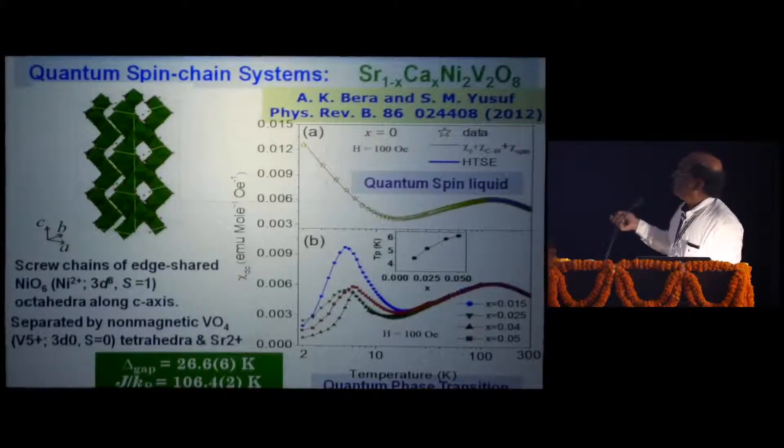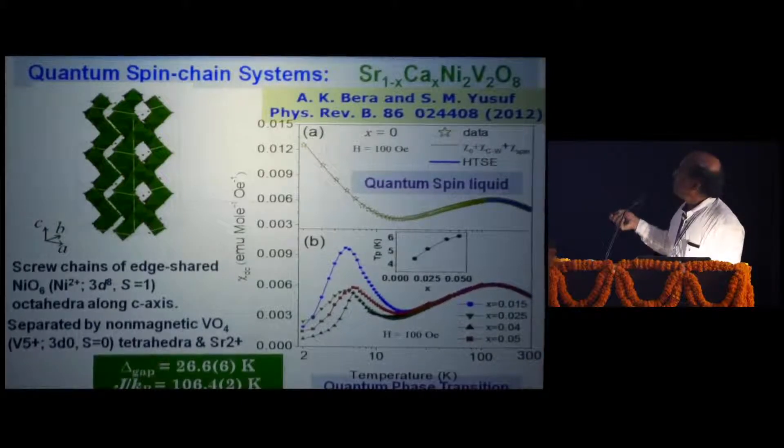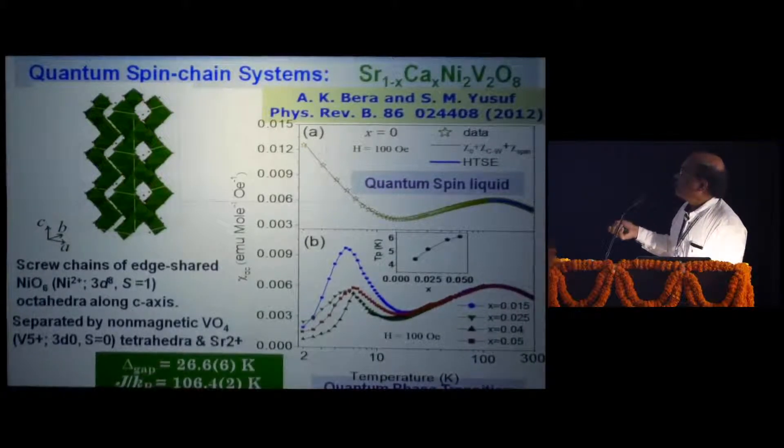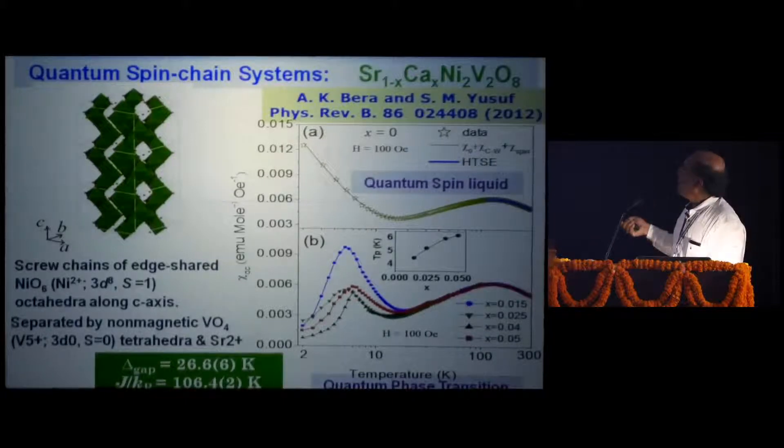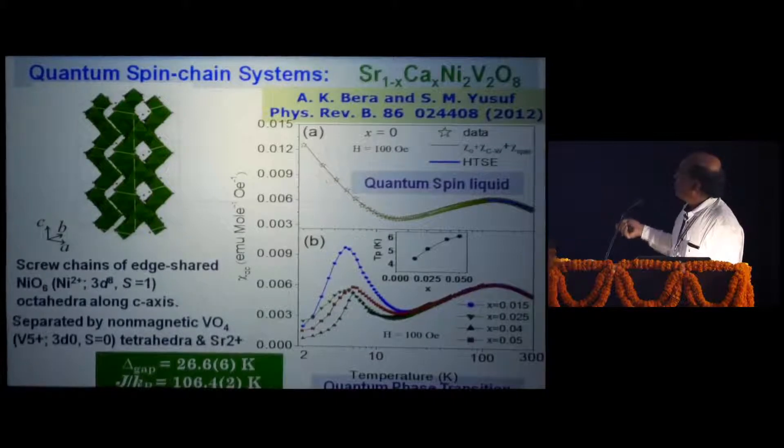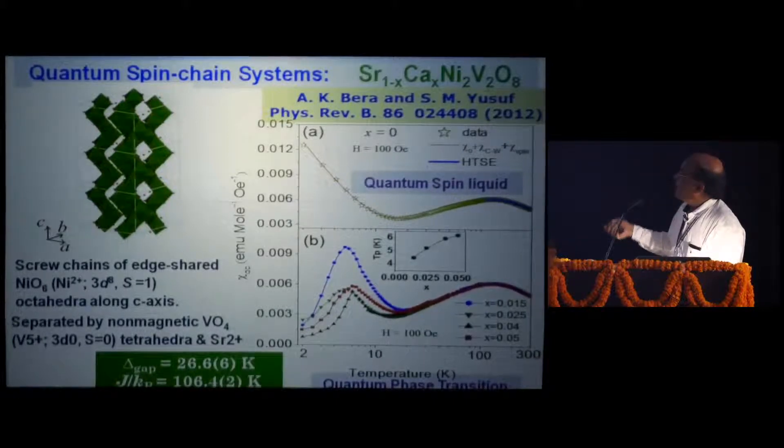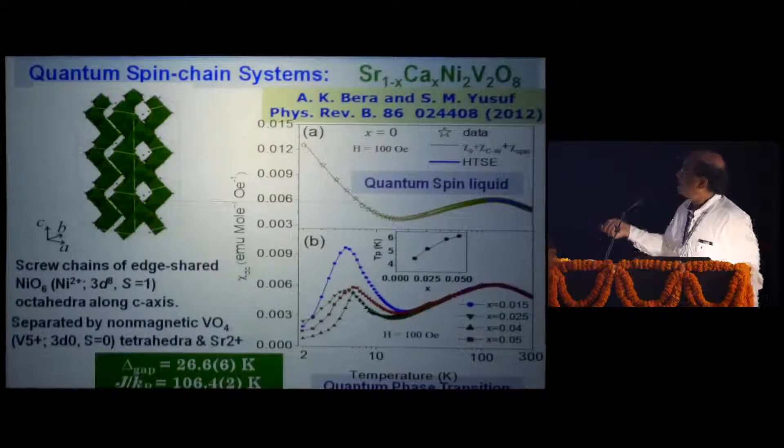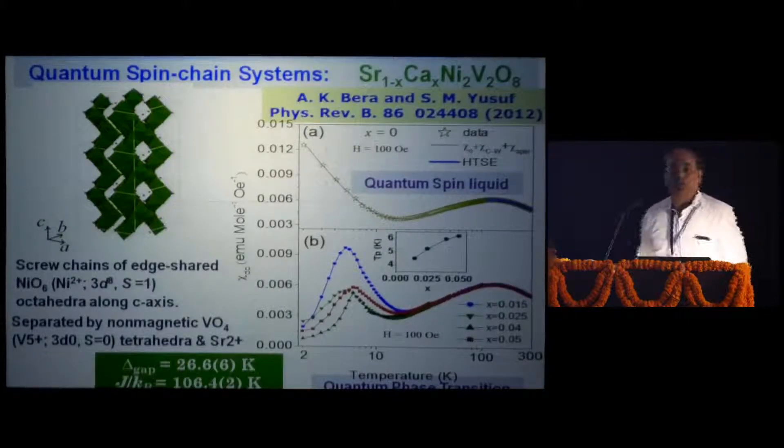These two chains are separated by non-magnetic VO4 and also Sr2 plus. That means magnetic screw chains are separated by non-magnetic layers, non-magnetic units. For this parent one, that is without any calcium, this is a spin liquid state. There is no magnetic phase transition which is seen from this susceptibility measurement as a function of temperature. But after substituting calcium at this position of strontium, we do see for all compositions there is a magnetic phase transition.